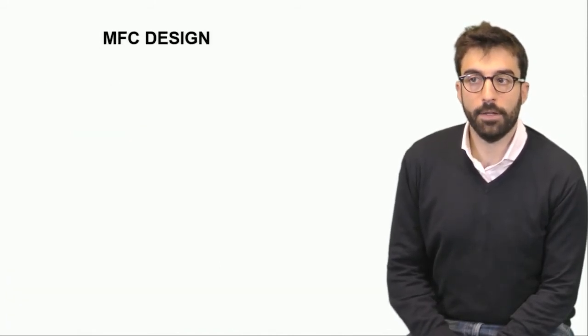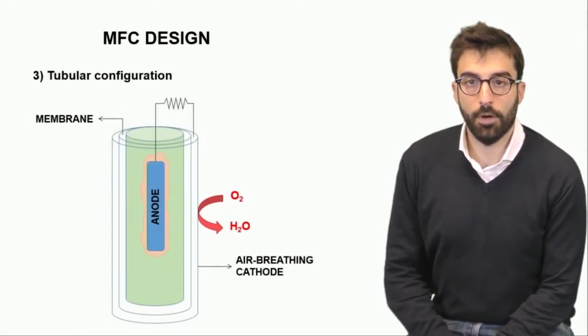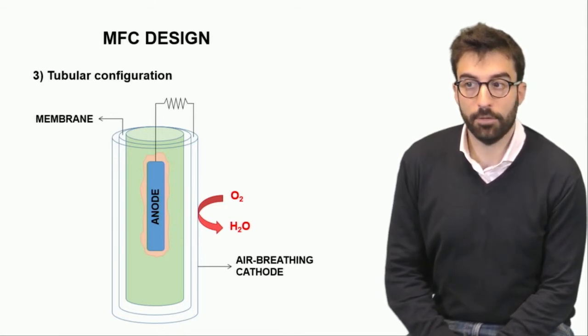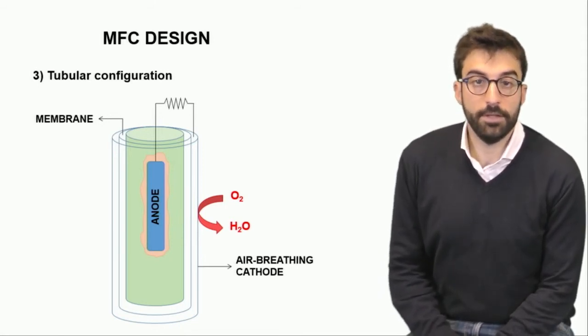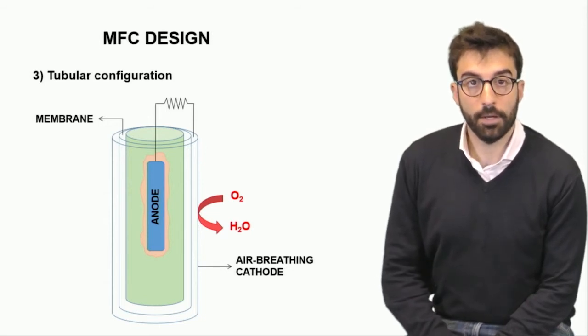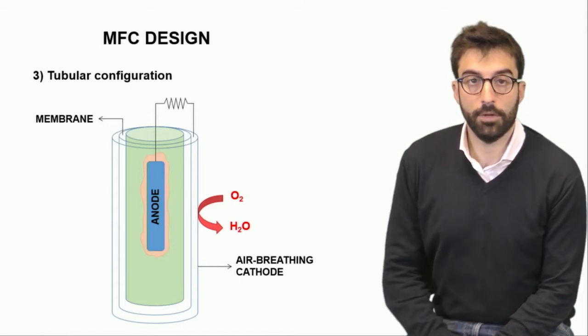Or finally, another kind of design is the tubular one. In this tubular configuration we have a volume which becomes the anode chamber that is surrounded by a cylinder that is the air-breathing cathode itself, so we have an aerobic atmosphere outside the tube or the volume.